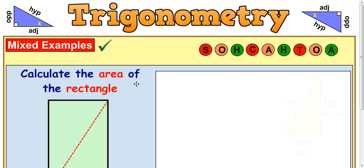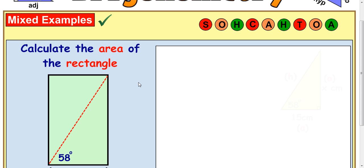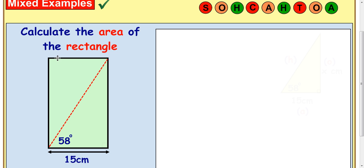The question asks you to calculate the area of a rectangle. So let's have a look at it here. It says calculate the area of the rectangle. We've got a rectangle here, we've got 58 degrees in it and 15 centimeters in the bottom.